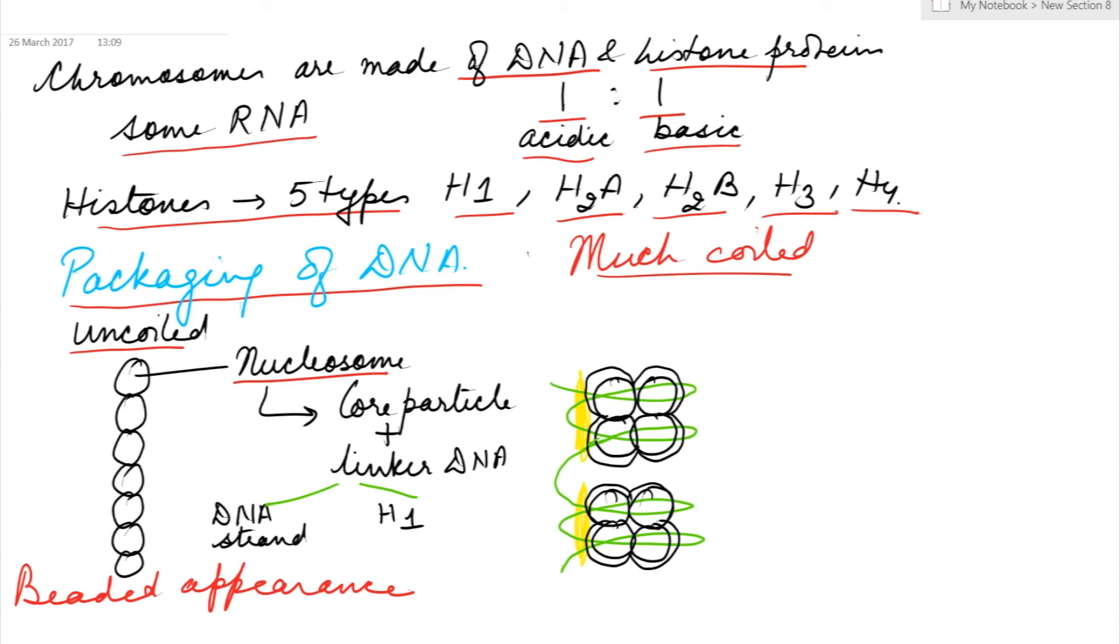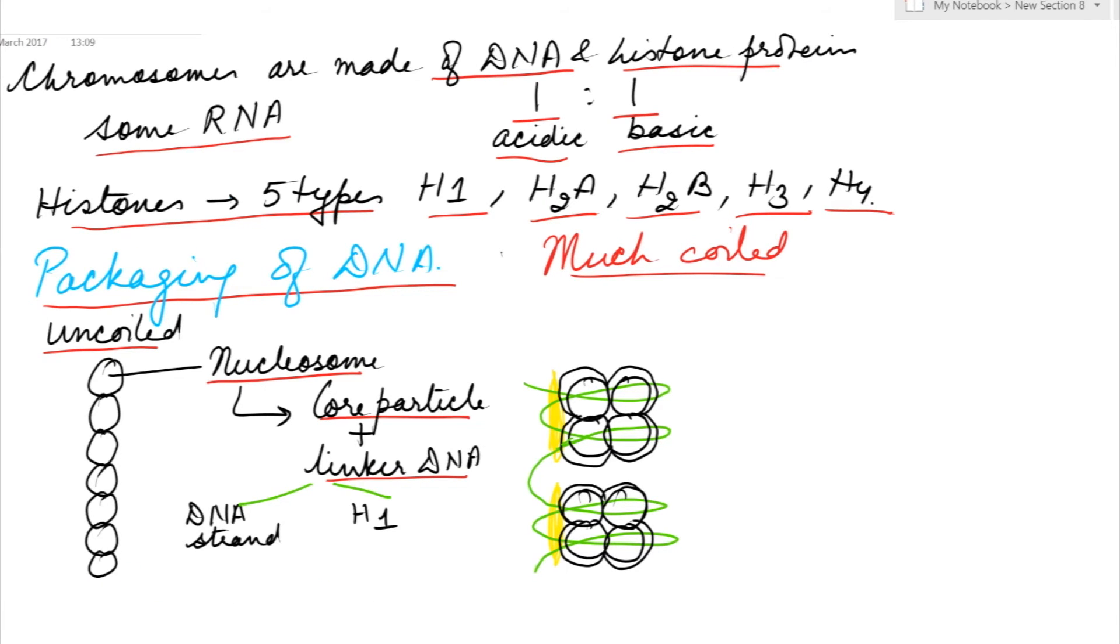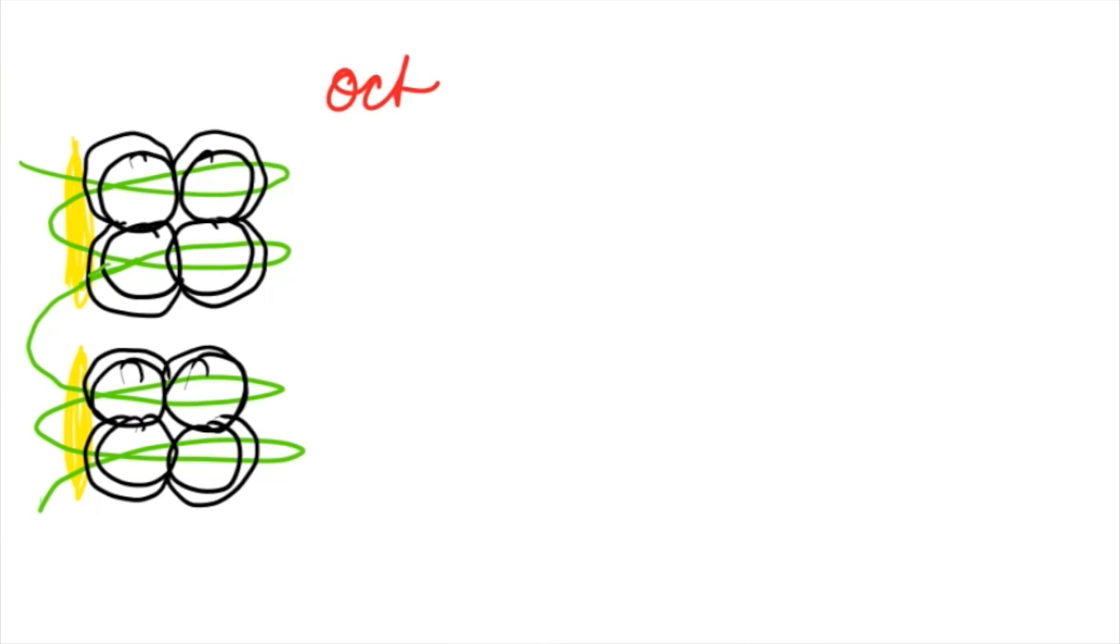Each nucleosome consists of a core particle and a linker DNA. The core particle is an octamer of four histone proteins: H2A, H2B, H3, and H4, each of which is present twice.